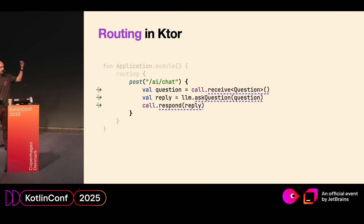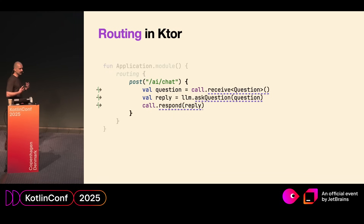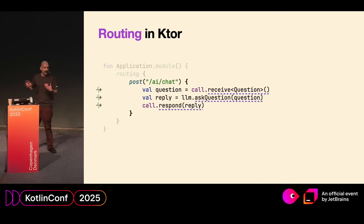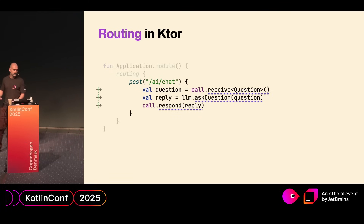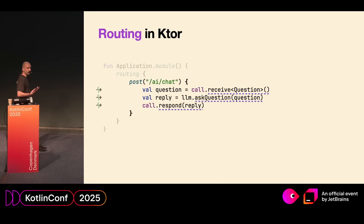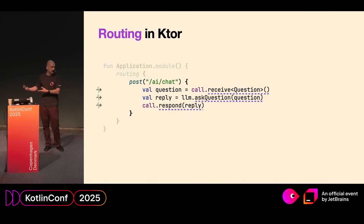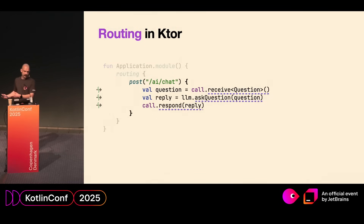This is extremely powerful because we can call any arbitrary suspending code inside. We can receive a question from the body of the request, can then send that question to an LLM. That might take a very long time, so we want to do this in a suspending manner. And when we finally get a reply from the LLM, we can send that reply to the request.